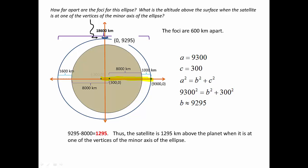So the distance that we're looking for is actually 1,295. The satellite is 1,295 kilometers above the planet when it's at one of the vertices of the minor axis of the ellipse. And we've answered the question.